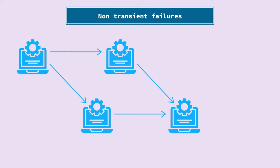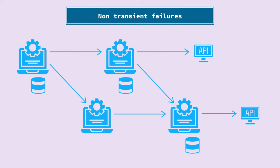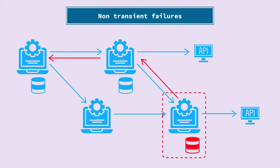Let's understand this using a microservice architecture diagram. Here we can see certain services, some with their own databases and some with external API calls. In a normal scenario, all these calls work as expected. But if one service's database goes down, calls from that service will start failing, and services depending on it will also get errors in return. Three services end up impacted — this is called a cascading failure, and it is a non-transient failure because the database will take time to recover.